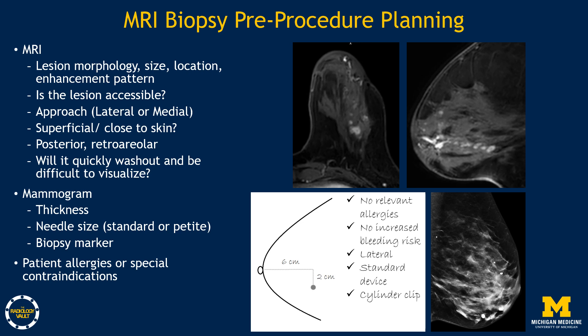I also review the mammogram, which will inform you of the breast thickness when in compression. Patients with thin breasts may require petite needles with a smaller trough, whereas patients with thicker breasts may better accommodate a standard needle with a longer sampling trough. Review the mammogram and pre-select the biopsy marker shape most appropriate for your patient. I also review patient allergies and any special contraindications or patient factors, and write down brief notes with this pertinent information prior to the biopsy. I also create a simple diagram of the expected location of my target after reviewing the MRI to assist in positioning on the day of biopsy.